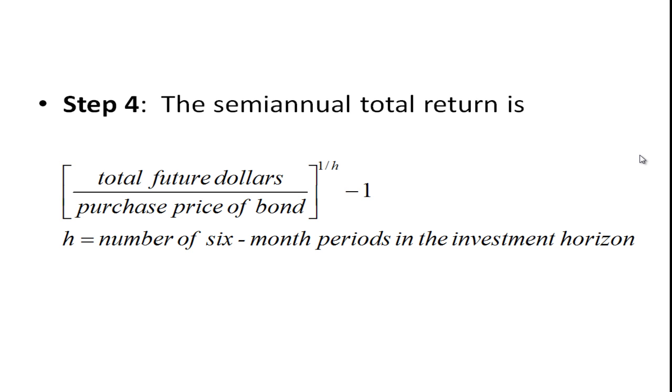Once we've done that, we simply calculate the return. And here we're going to calculate the semi-annual total return. It's the total future dollars, that's step three, divided by the purchase price of the bond. And it's going to be raised to the one over h power minus one.